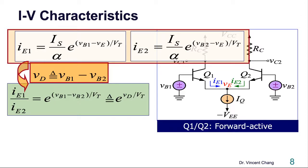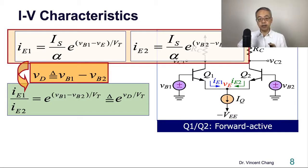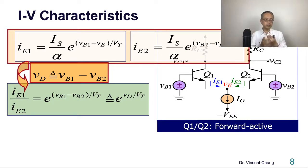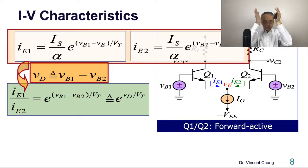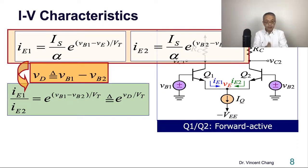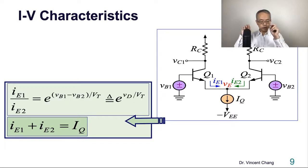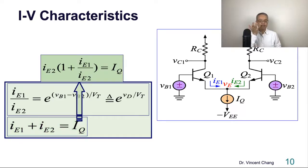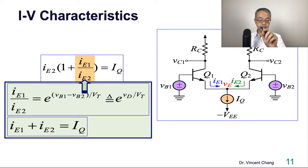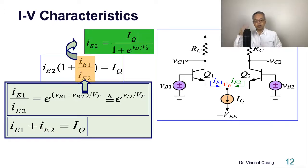To solve for two unknown variables we need two equations. The first comes from the transistor IV characteristic. The second comes from the circuit: no matter how the currents change, the sum of the two currents must remain constant — equal to IQ, supplied by the constant current source. Solving these two equations simultaneously gives us IE2 in terms of the differential input, where the highlighted exponential term is replaced by exponential of VD divided by VT.